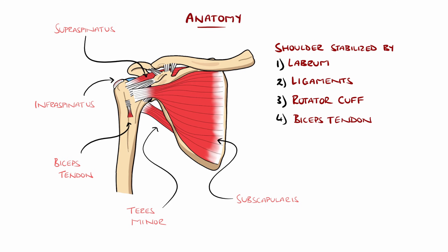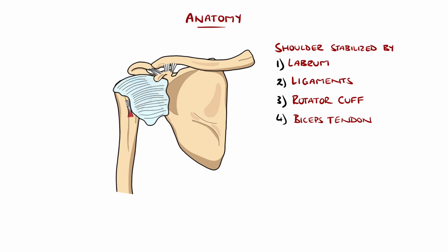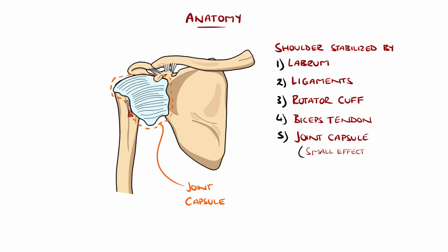A capsule surrounds the joint, known as the joint capsule, which also aids in stabilizing the shoulder. Adhesive capsulitis seems to affect the anterior, superior, and inferior portions of the capsule.